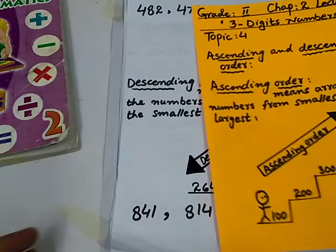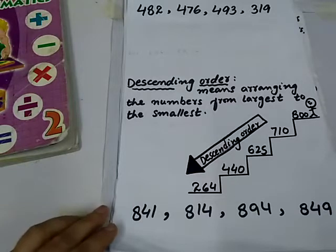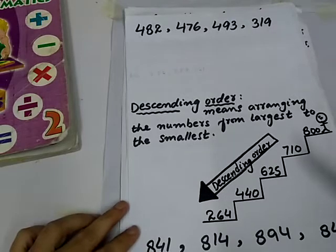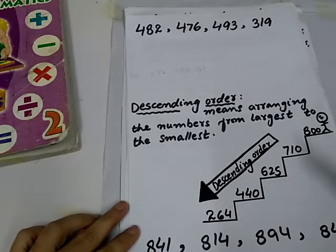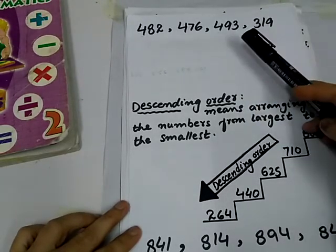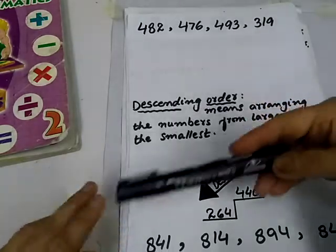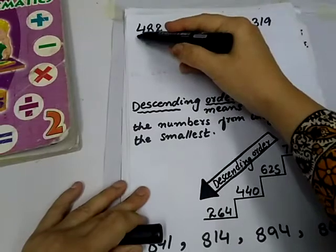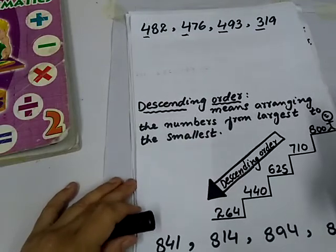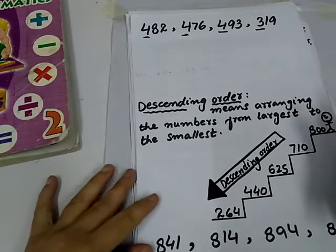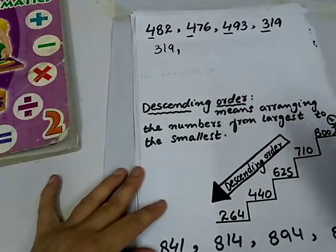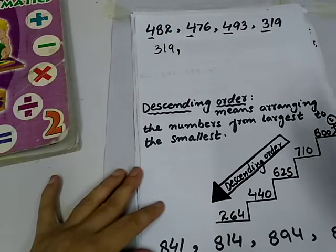So, see the numbers. 482, 476, 493, 319. Now, trick number 1. Count the digits. These are all three digits numbers. Now, check the first digit place value. The first digit place value is 400, 400, 400 and 300. In ascending order, the number is the smaller number first. So, we write 319 is the smaller number. So, smaller number comes first.